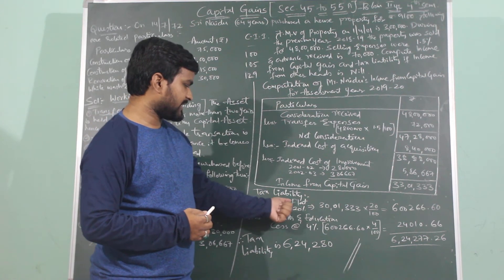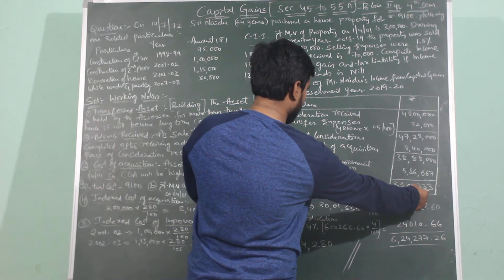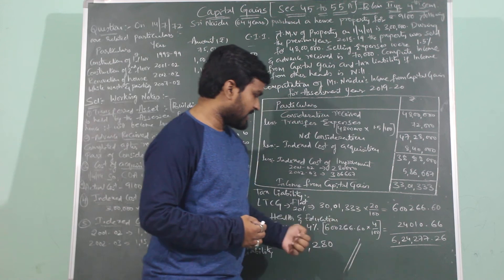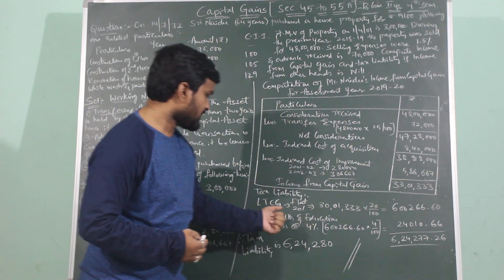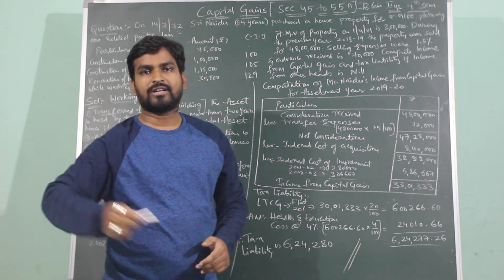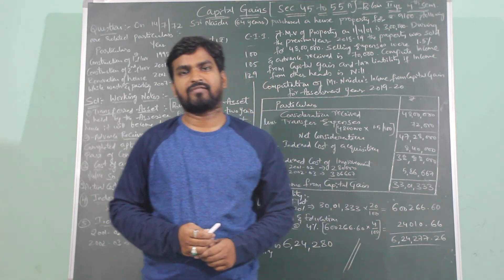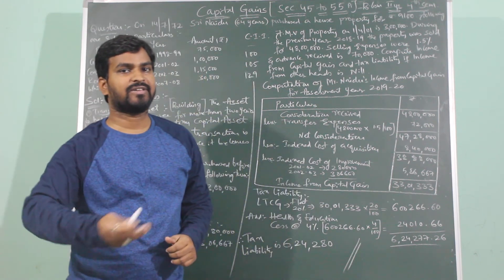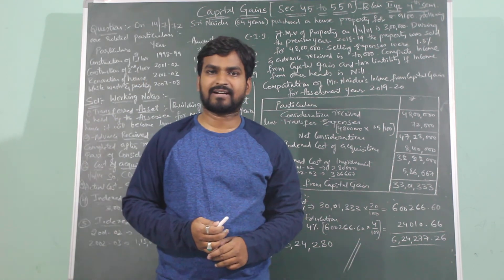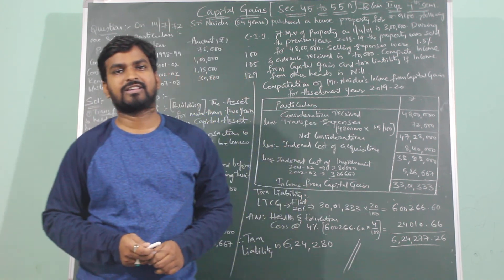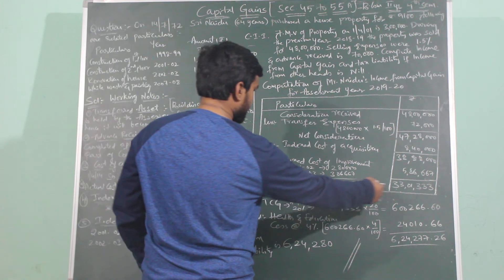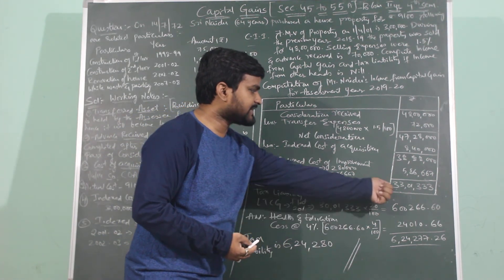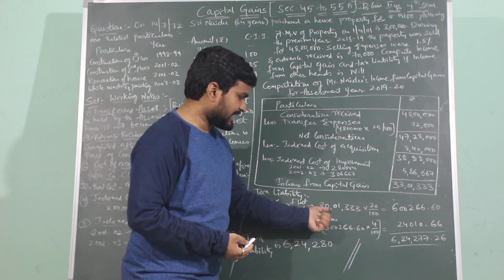This income from capital gain is long term capital gain, taxable at a flat rate of 20%. Income from capital gain is Rs. 33 lakhs 1,333. As the assessee has no other source of income, the basic exemption limit will be deducted from long term capital gain. The assessee's age is 64 years, so he is a senior citizen whose exemption limit is Rs. 3 lakhs. Therefore: long term capital gain Rs. 33 lakhs 1,333 minus basic exemption Rs. 3 lakhs = Rs. 30 lakhs 1,333.